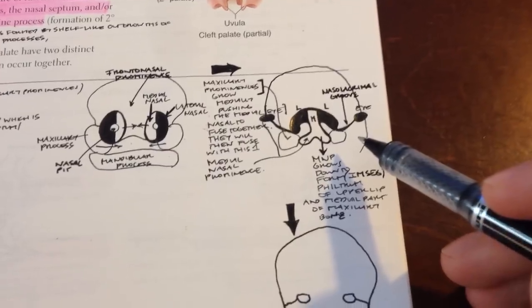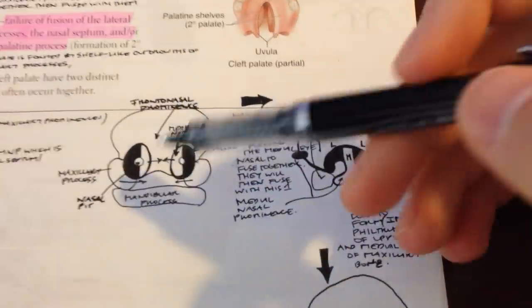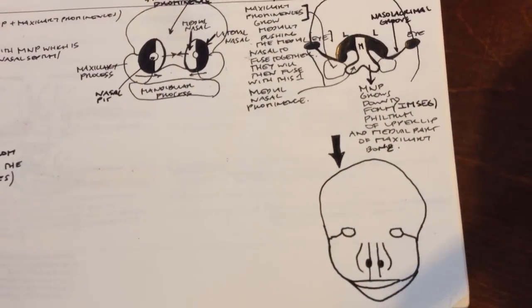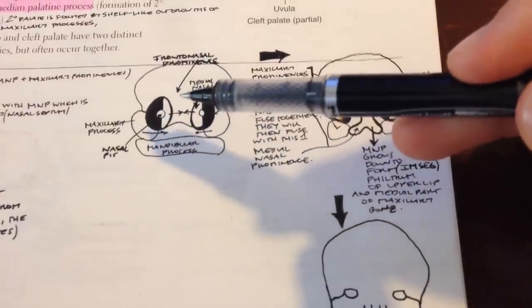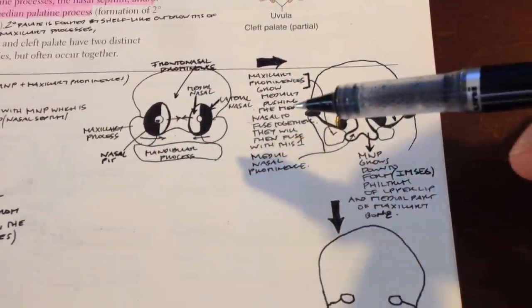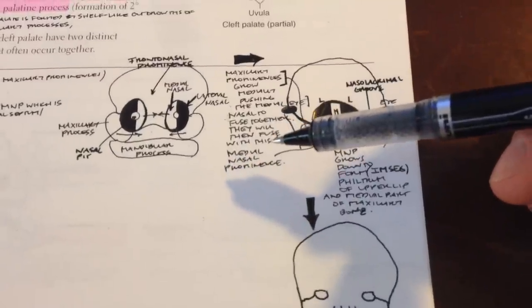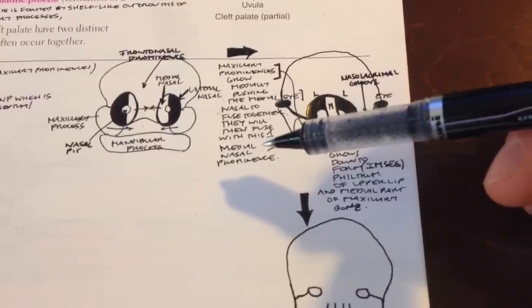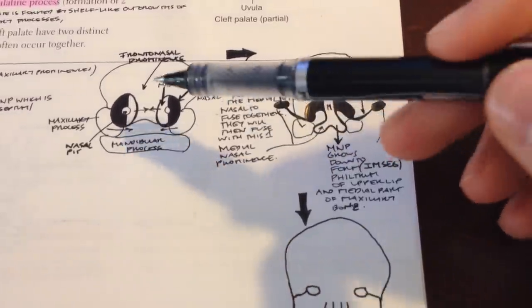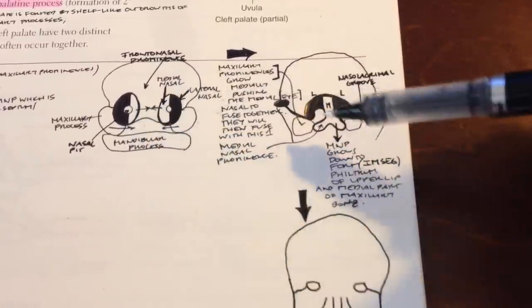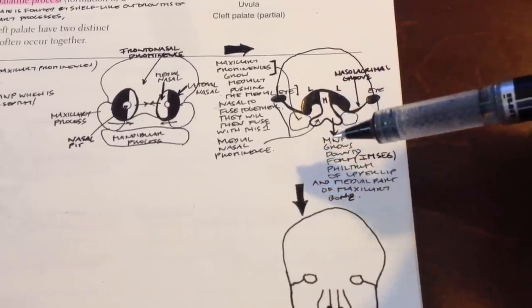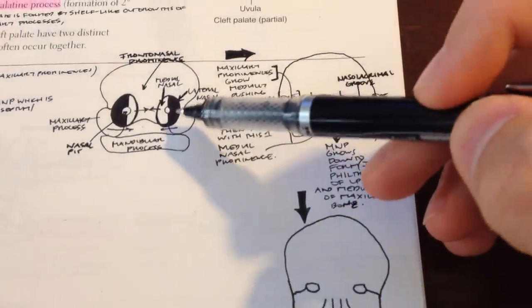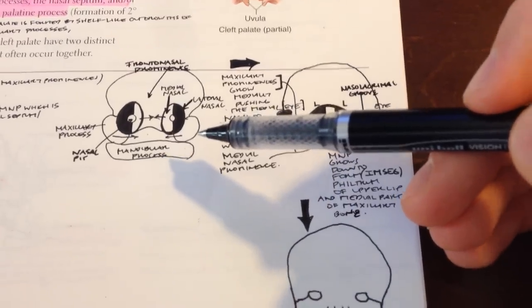The nose is formed by several structures. The frontal nasal prominences form the bridge of the nose — the hard top part — and some of the forehead. The merged or fused medial nasal prominences form the crest and tip of the nose and the nasal septum. The lateral nasal prominences form the lateral parts of the nose — the alae, or wings and sides of the nose.